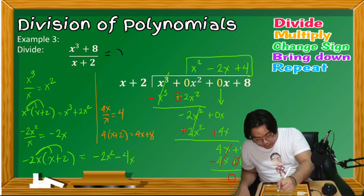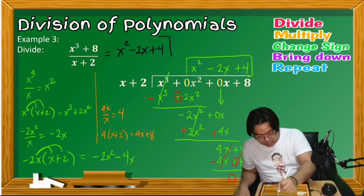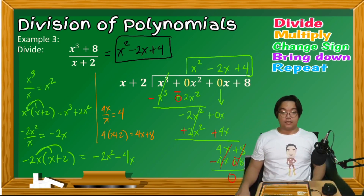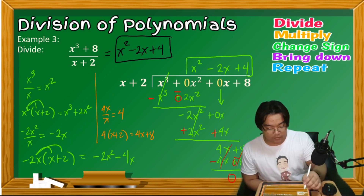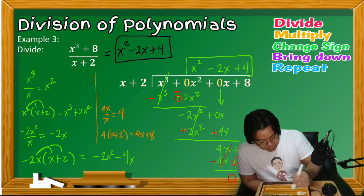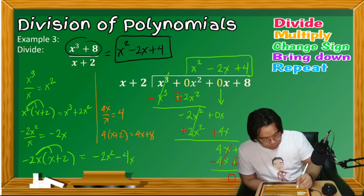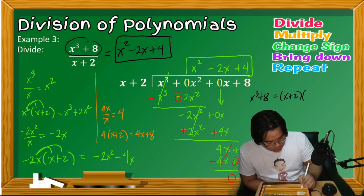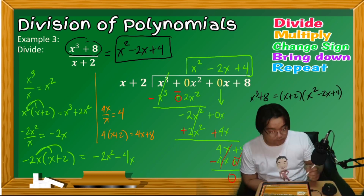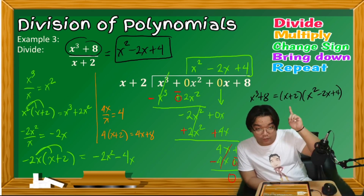So x³ + 8 divided by x + 2 equals x² − 2x + 4. Since there is no remainder, we can write x³ + 8 in factored form as (x + 2)(x² − 2x + 4). This is a recall of the sum of two cubes factoring method from lower grades.